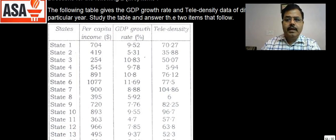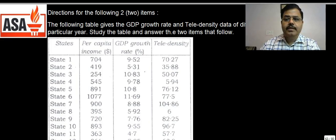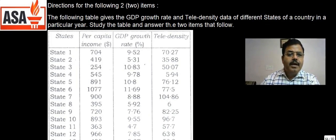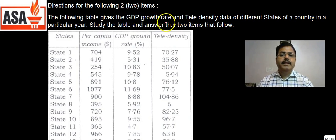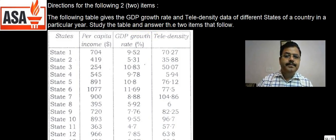Now let us discuss this question. Here is some information given that describes directions for the following two items. The following table gives the GDP growth rate and tele-density data of different states of the country in a particular year. Study the table and answer the following two items.